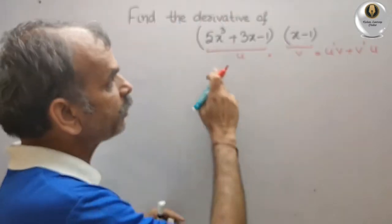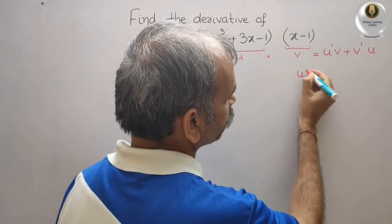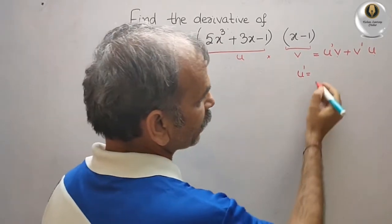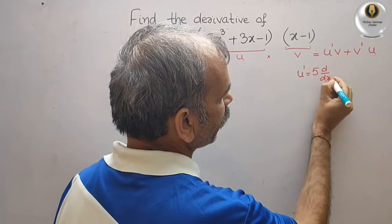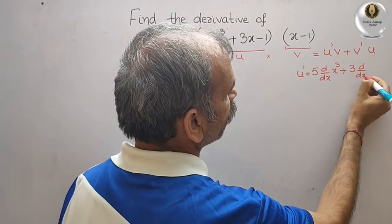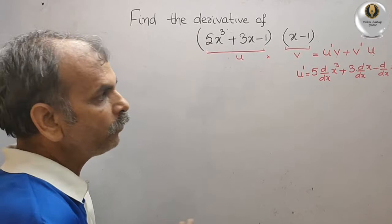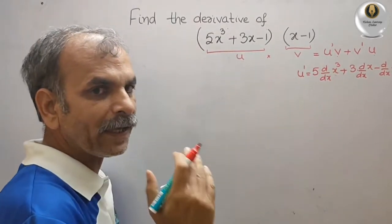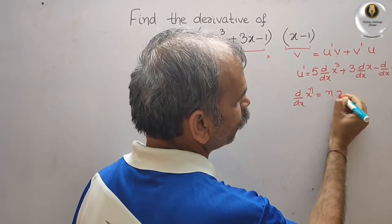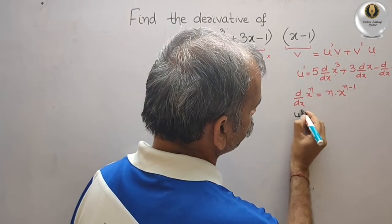Here u dash and v dash are the derivatives, while v and u are the original functions. First, we will find u dash — the derivative of u, which is 5x³ + 3x - 1. We can write it as: 5 times d/dx of x³ plus 3 times d/dx of x minus d/dx of 1. We have the formula: d/dx of xⁿ equals n times x to the power of n minus 1.